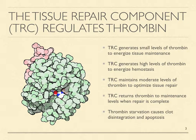The tissue repair component continuously generates small amounts of thrombin in all tissues to energize the slow collagen turnover and cell replacement necessary for tissue maintenance. It generates high levels of thrombin to energize hemostasis in the immediate aftermath of injury, then maintains moderate thrombin elevations within a narrow range to optimize tissue repair. As tissue repair nears completion, it returns thrombin generation to maintenance levels.